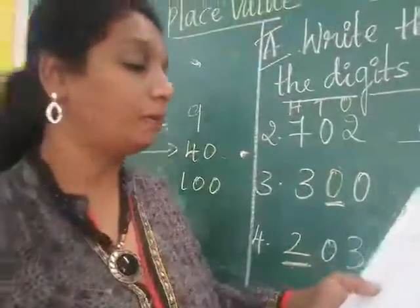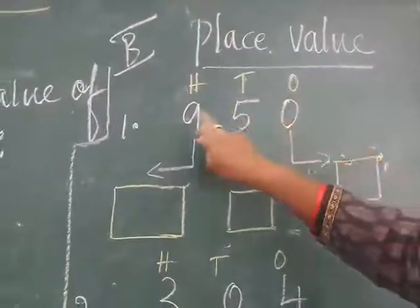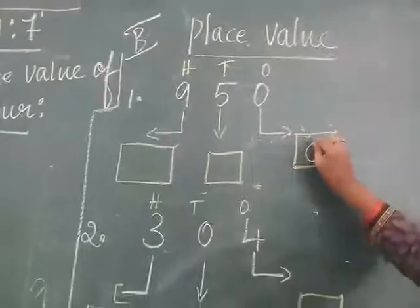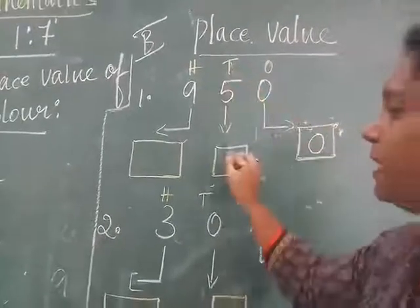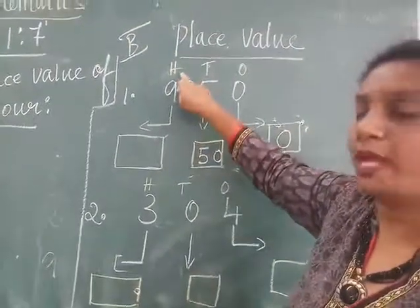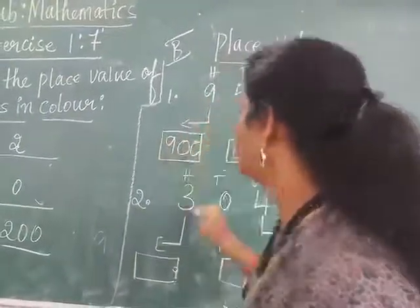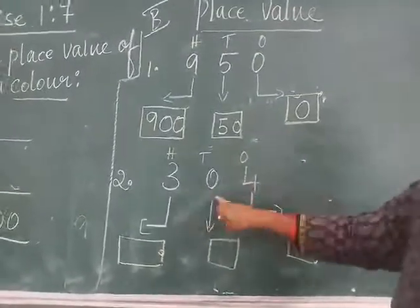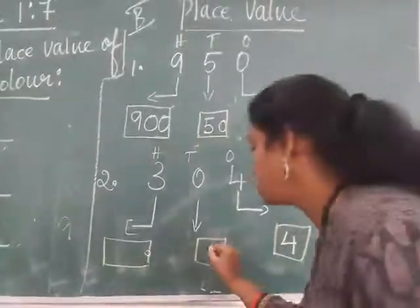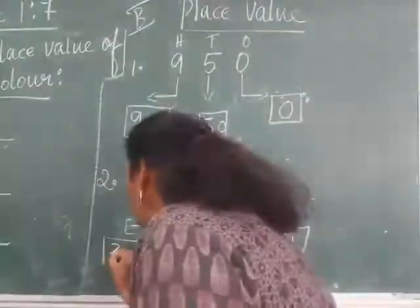The next is: write the place value of each digit — 1's, 10's and 100. Here, 0 is in 1's place, you have to write 0 only. 5 is in 10's place, you have to write 50. The next one: 9 — 9 is in which place? It's in 100's place, the place value is 900. The next one: 3, 300, 4 — 4 is in 1's place, means it's 4. 0 in 10's place, you have to write 0. 3 is in 100's place, means you have to write 300.